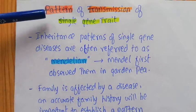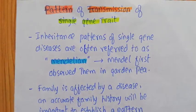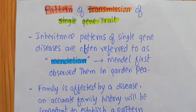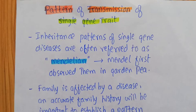When you talk about genetics, when you use the term transmission or heredity, that actually means how the characters are transferred from the parent to the offspring. When you talk about the single gene trait, that means you are talking about those traits that are controlled by single genes, or you can say the phenotype shown by that particular generation is controlled by a single gene.